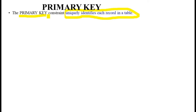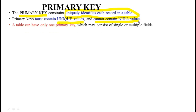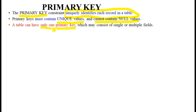For example, in a college or university, every student has an ID that uniquely identifies them. By using that student ID, we can identify each student in the university or college. A primary key must contain unique values and cannot contain NULL values. A table can only have one primary key, which may consist of single or multiple fields.